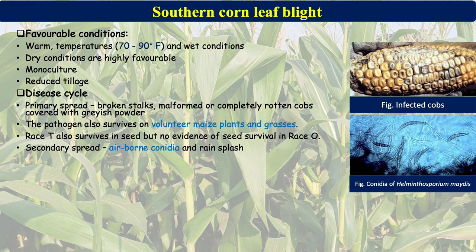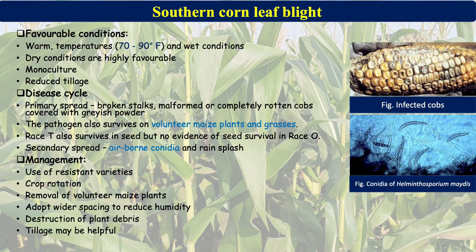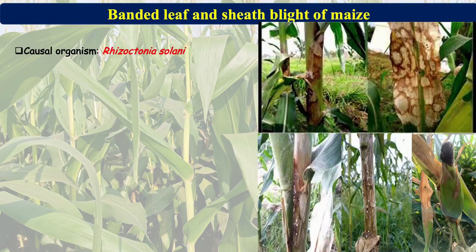For management of Southern Corn Leaf Blight, use healthy disease-free certified and resistant seed. Crop rotation for at least three to four years is highly effective. Remove volunteer maize plants from the cropping area, adopt wider spacing to reduce humidity, and destroy plant debris. Good tillage practices are also helpful for management in field conditions.